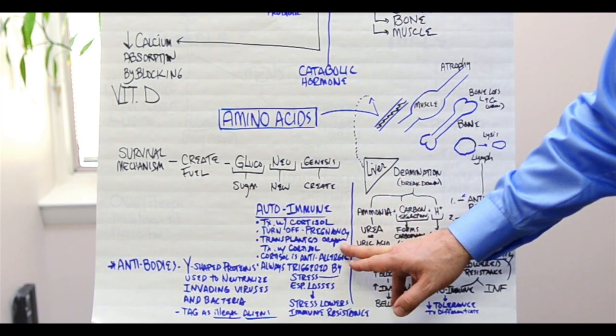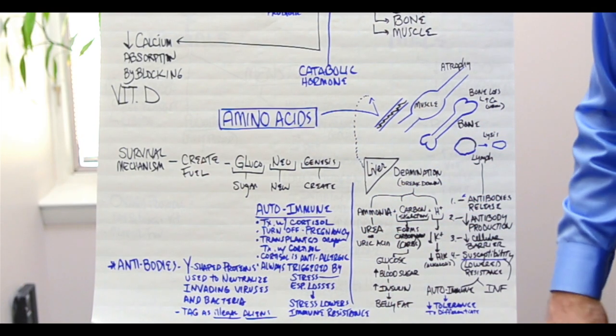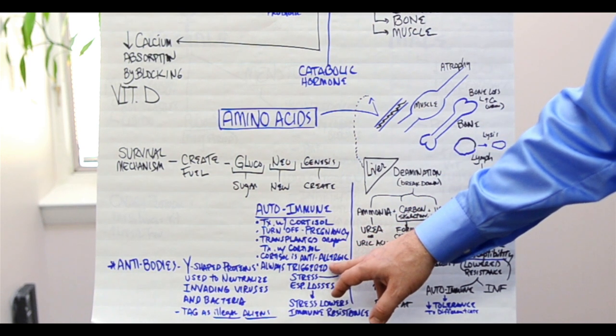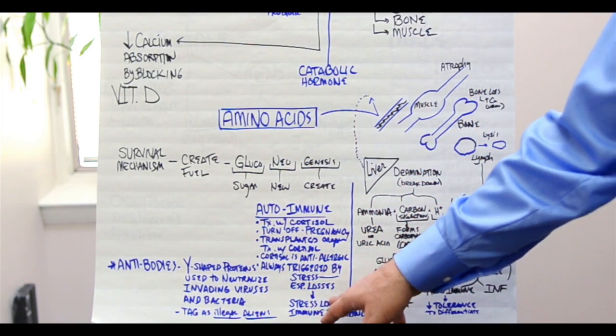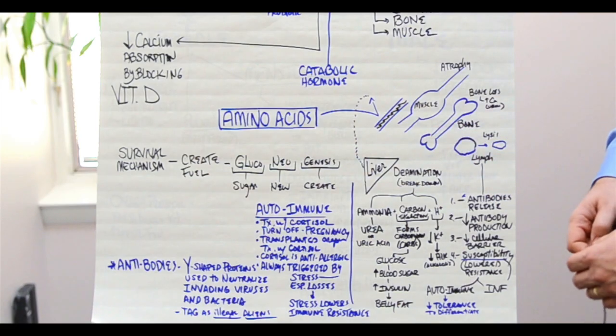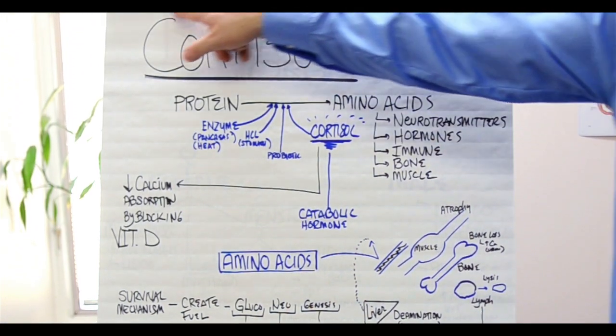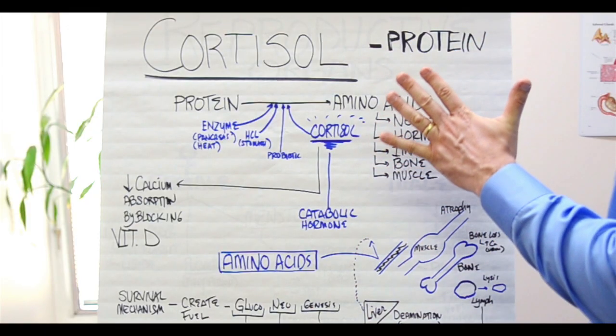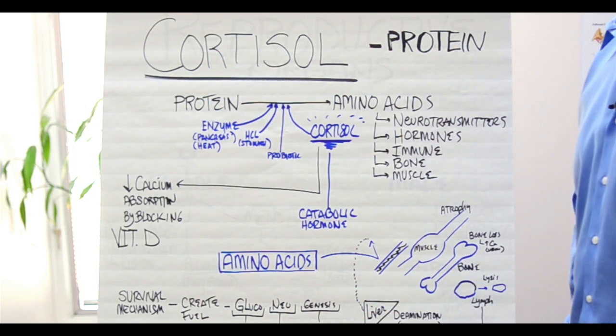Transplanted organs, they have to take cortisone because their body rejects it. They develop antibodies against it. Cortisol has anti-allergic properties. But autoimmune problems are always triggered by stress events. I've never met anyone that didn't have that situation. So that kind of debugs why people have autoimmune. Cortisol is a very, very destructive thing to your protein if it's in high amounts.